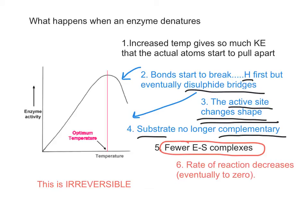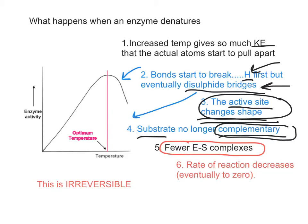In an exam question about denaturing, the key terms to include are: the increase in kinetic energy, H bonds, disulfide bridges, the active site changing shape — that is vital — and the idea of complementary fit. If you change the shape of the active site, it will not be complementary anymore. The consequence is fewer enzyme substrate complexes; link that all to the decrease in rate of reaction. Be very specific about the biochemistry happening in the active site rather than being vague.